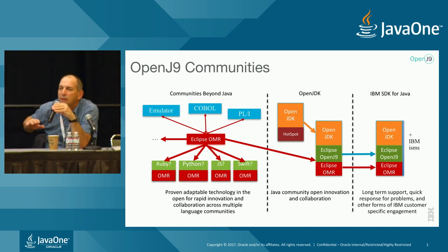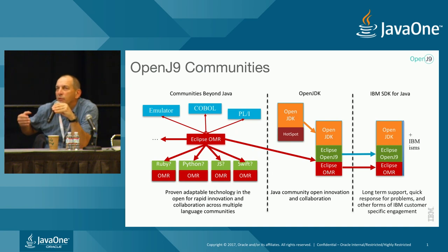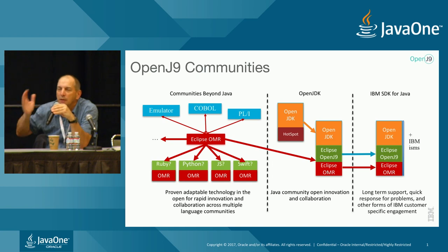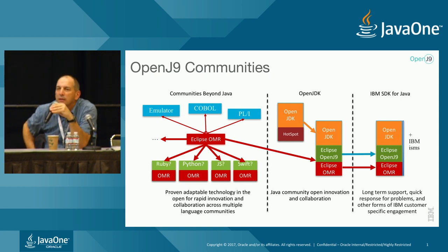Two weeks new doesn't mean it's two weeks new — that's finally when we got it out to open source. It's actually a high-performance JVM, and we've been optimizing it for new cloud workloads. Cloud workloads have a lot more dynamic behavior in terms of memory use and adaptability. We optimize for things like memory use — size with comparable throughput.